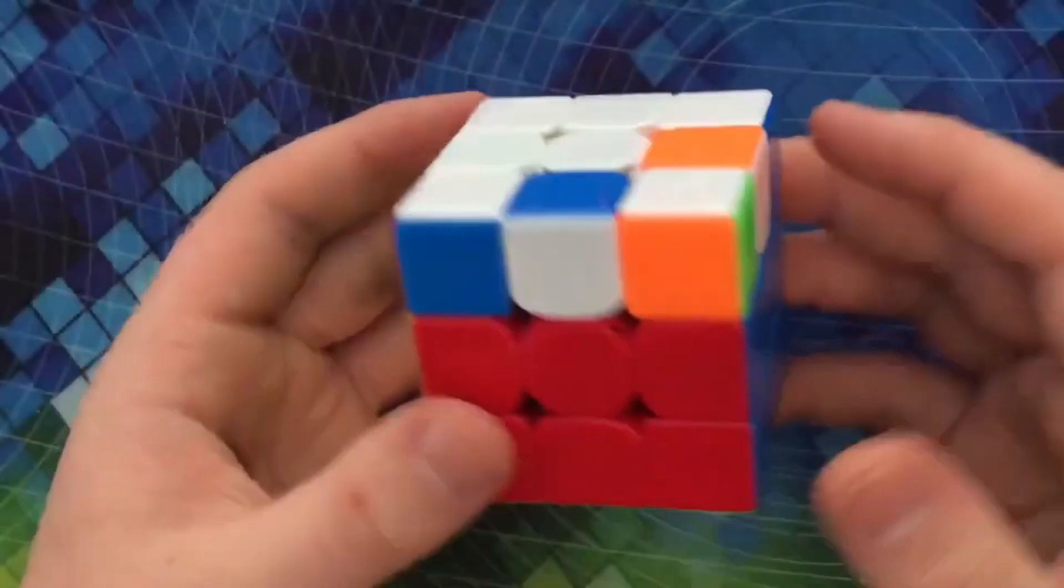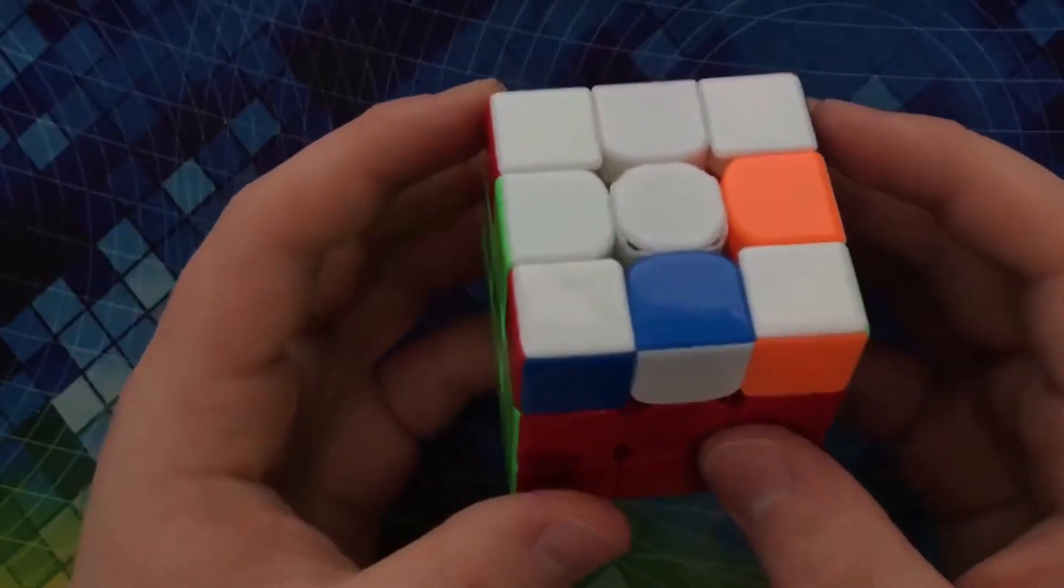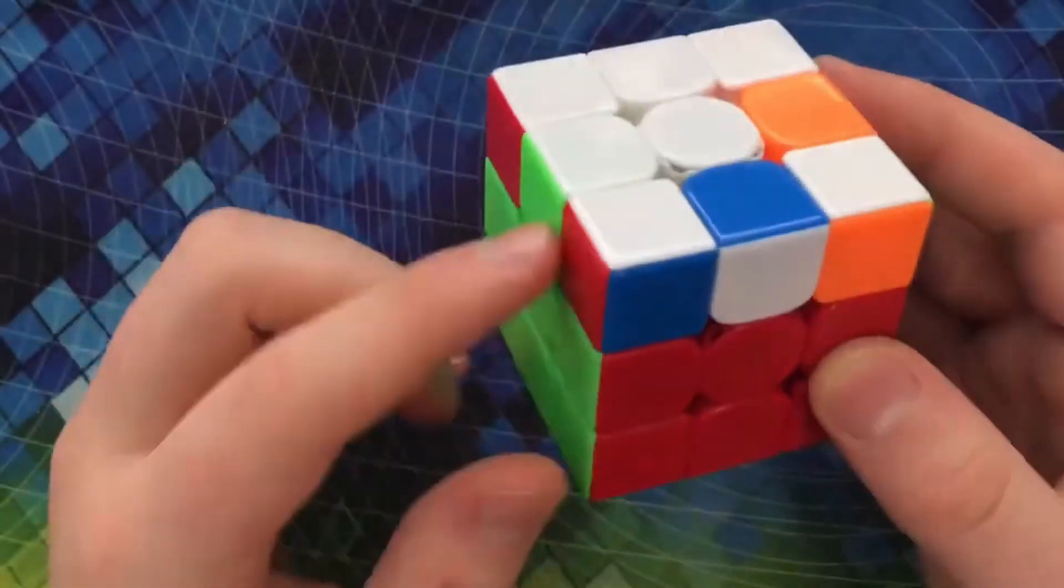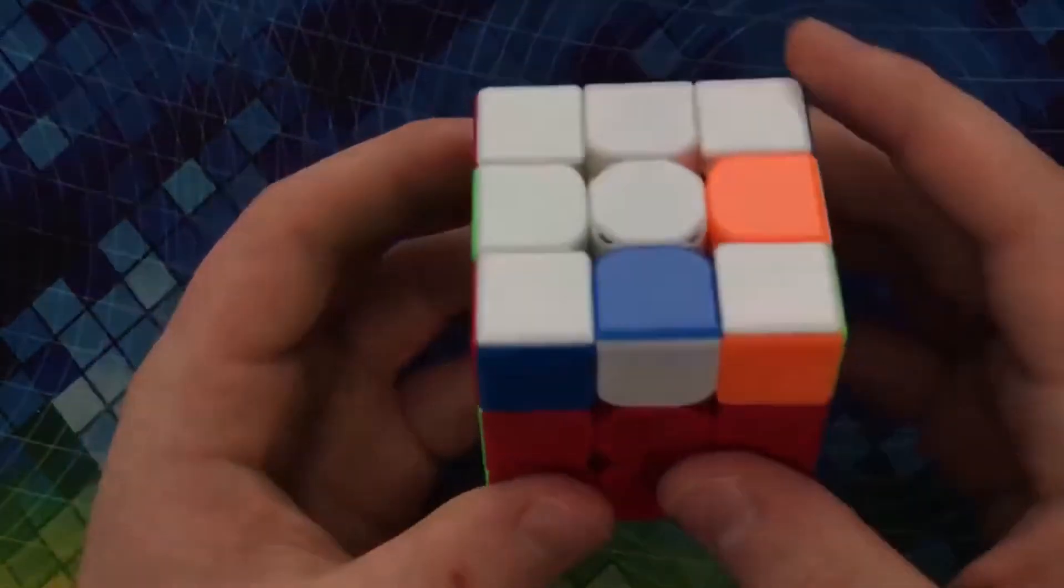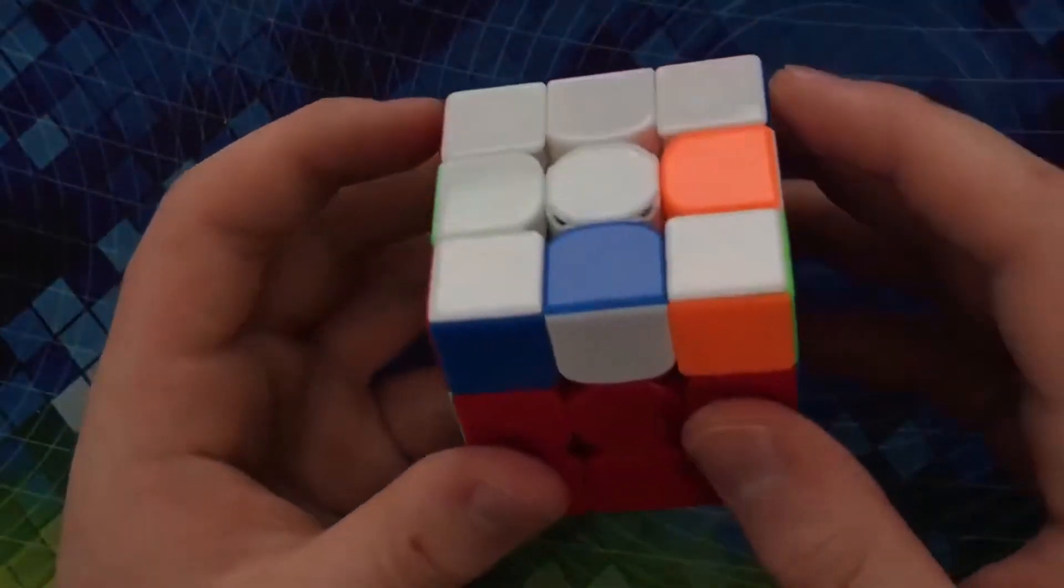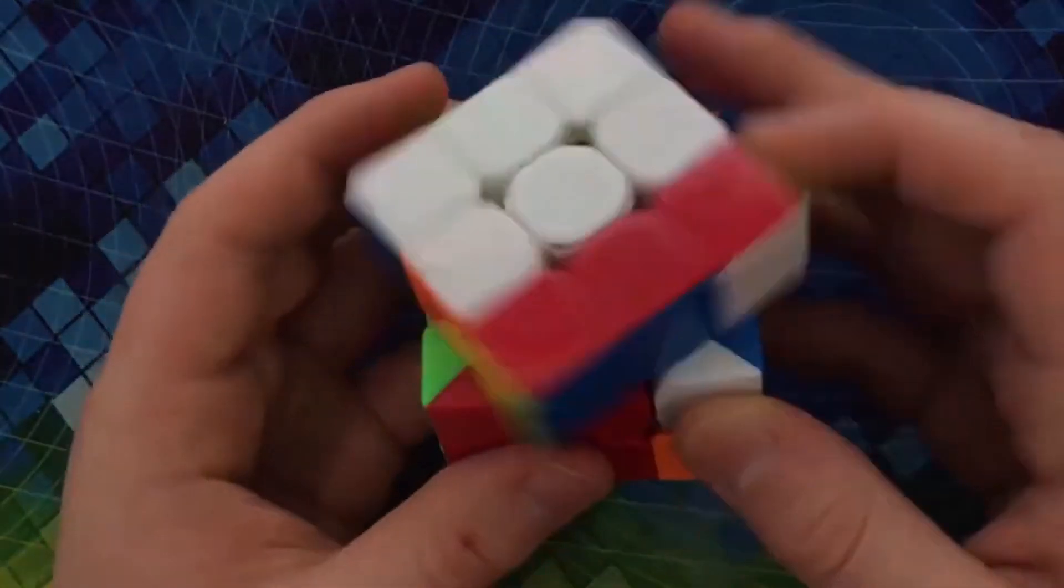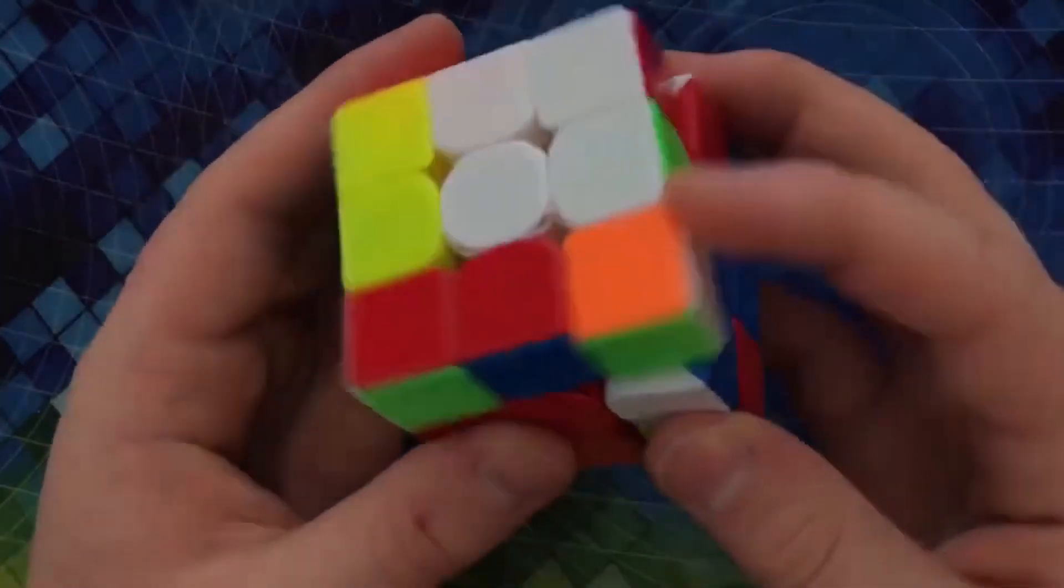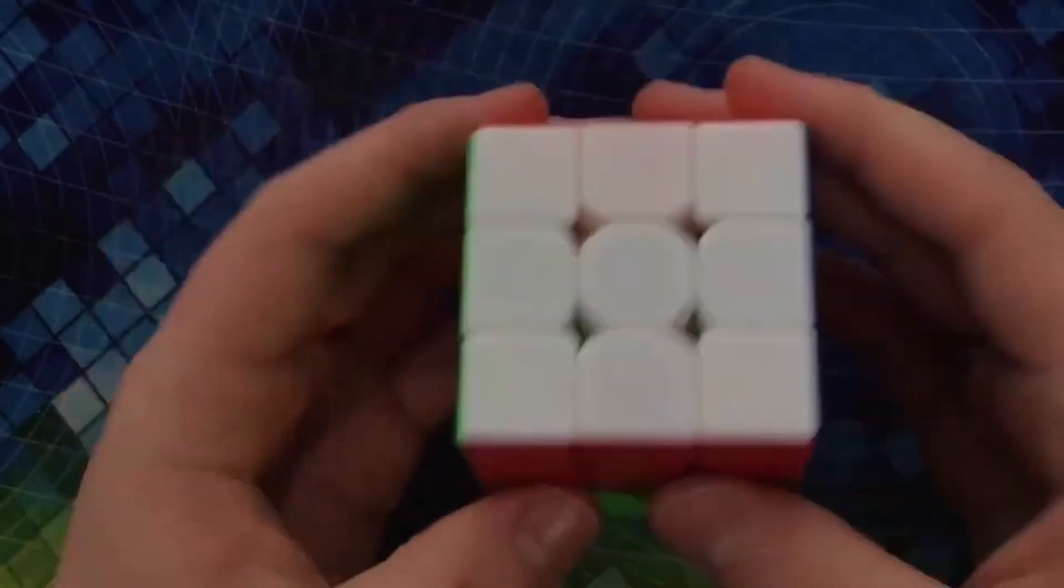And then, for this OLL, this is a bit of a special case. From this angle, I can tell that the corners are going to stay the same, and the headlights - these are all going to stay the same. This edge is going to come right here. So I know that this is going to be a G-perm, because the edge is going to come here. I can cancel before I'm done with the OLL into the G-perm algorithm, like that. And then I finish this off.